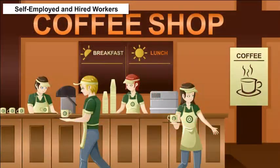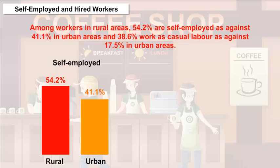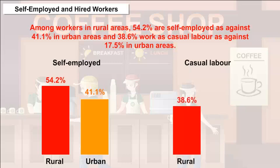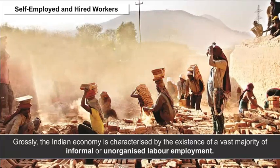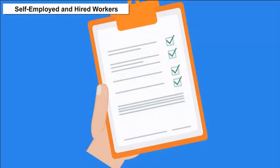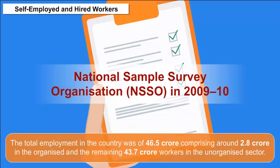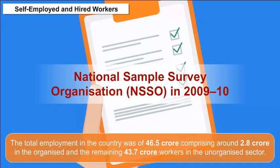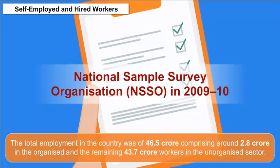Among workers in rural areas, 54.2% are self-employed, as against 41.1% in urban areas, and 38.6% work as casual labor, as against 17.5% in urban areas. The Indian economy is grossly characterized by the existence of a vast majority of informal or unorganized labor employment. As per an NSSO survey in 2009-10, total employment was 46.5 crore, comprising around 2.8 crore in the organized and 43.7 crore workers in the unorganized sector.